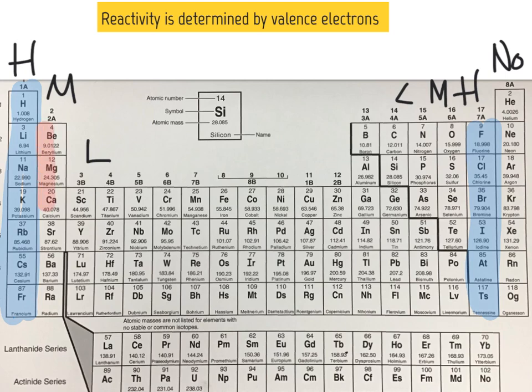If an atom has 2 or 6 valence electrons, they are going to be slightly less reactive. If an atom has 3 to 5 valence electrons, it is going to be even less reactive.